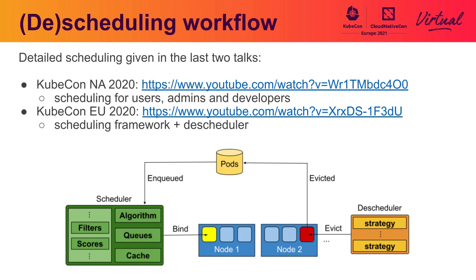Eventually, some pods may diverge from the original scheduling plan. That's where the DScheduler component comes in — its goal is to make sure that scheduling criteria are still respected. It contains a list of strategies, each strategy responsible for a scheduling constraint. Once it runs, it goes through every pod and every node, and in case a pod violates a constraint, the pod is evicted from its node. For example, some nodes may be over-utilized, so the DScheduler evicts as many pods as needed to free resources from the over-utilized node, with the hope that those pods will land on an under-utilized node.